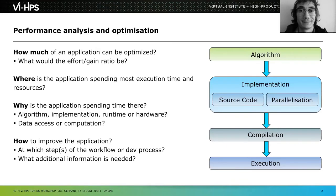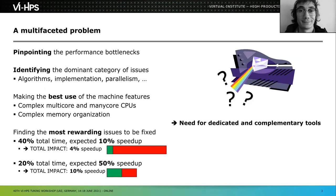That's where MAQAO comes into play — we bring information that might help you tune the compilation process. The general idea is to attack this multifaceted problem step by step, through an elimination process. The first thing we do is pinpoint the performance bottlenecks, understand where the application is spending time, and understand why — relating it to algorithmic choices, implementation code patterns, or the choice of parallelism paradigm.